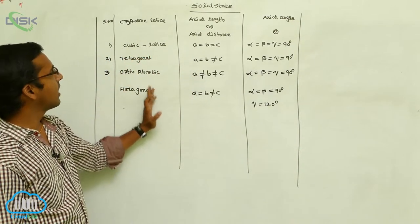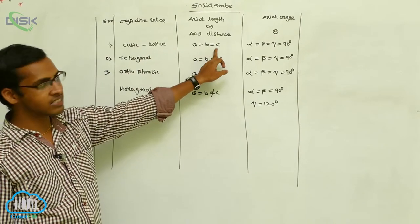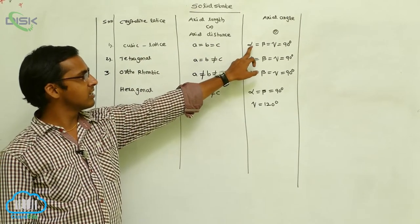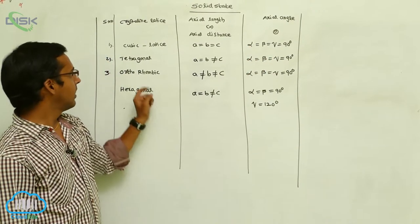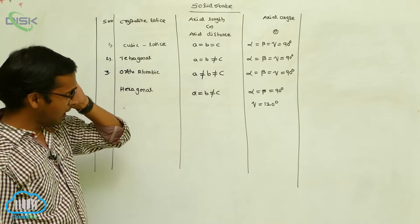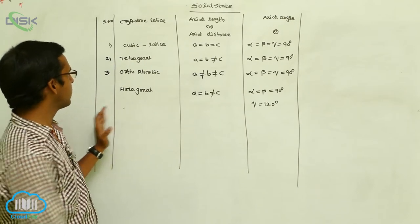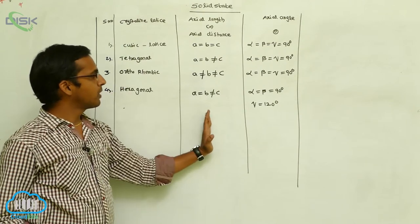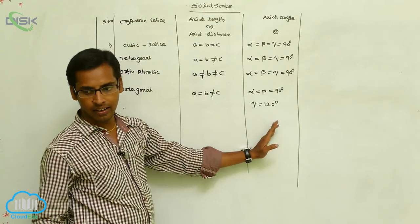To summarize the crystalline lattices: in cubic, all axial lengths and angles are equal, with alpha equals beta equals gamma equals 90 degrees. In tetragonal, orthorhombic, and hexagonal, the parameters differ as discussed. These are four of the 14 Bravais lattice types, distinguished by their axial length and axial angle.